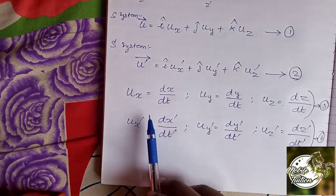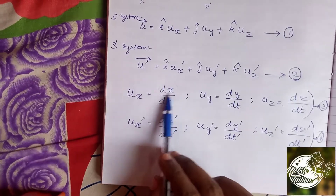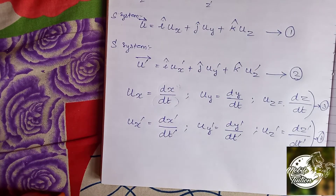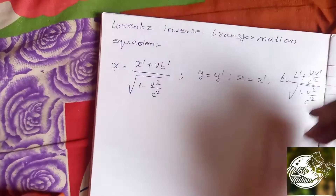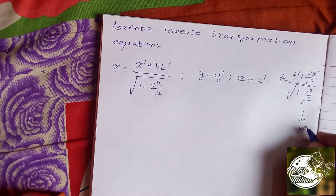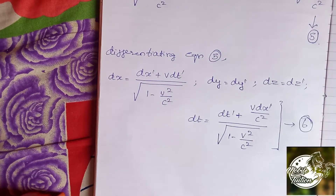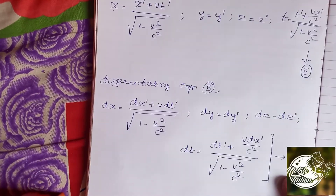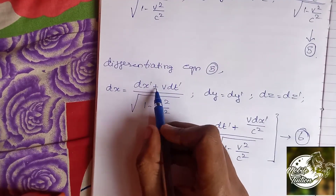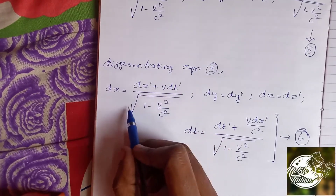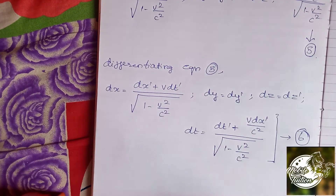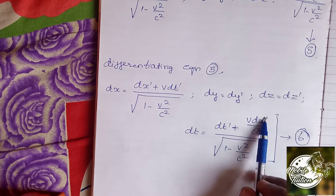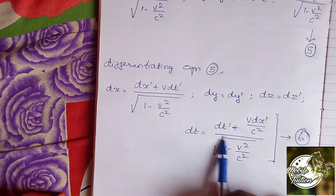Then we will find ux equals dx by dt. We will find x is defined by dx and t is defined by dt. Then we will find the answer to that — equation number 5. Then we will find equation number 1. dx is defined by dx plus v dt prime divided by root of 1 minus v square by c square. dy is defined by dy, dz is defined by dz, dt is defined by dt plus v dx prime by c square divided by root of 1 minus v square.